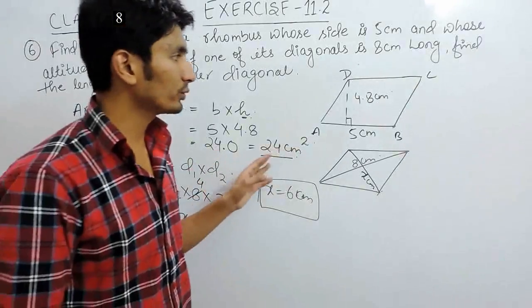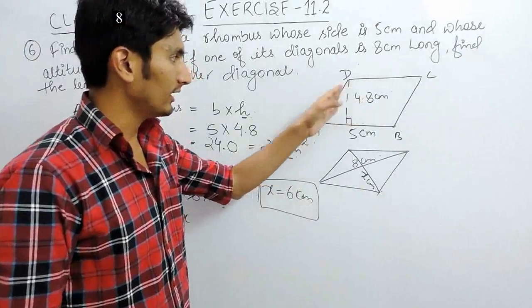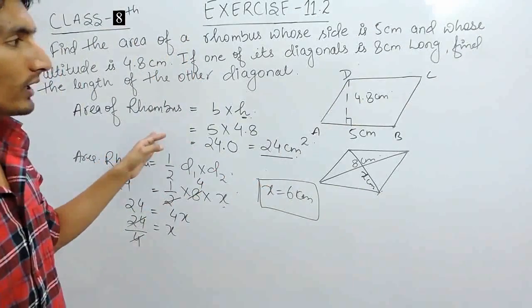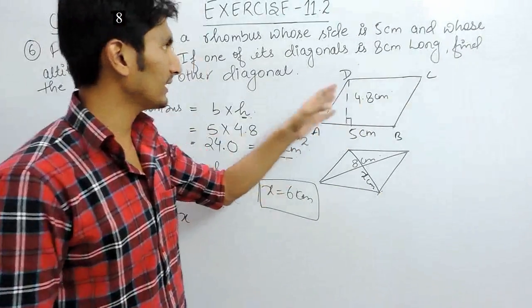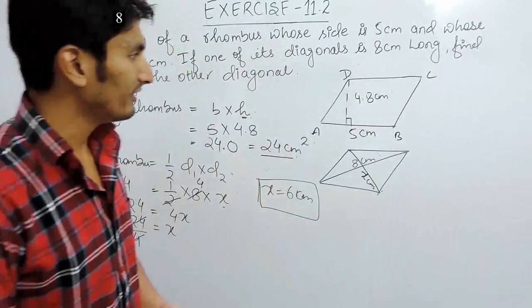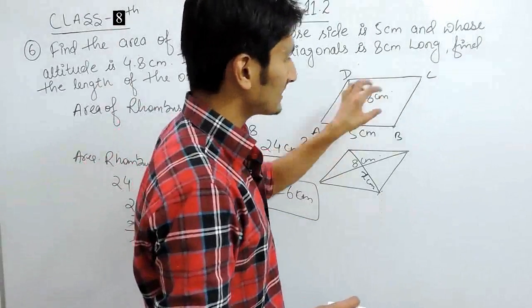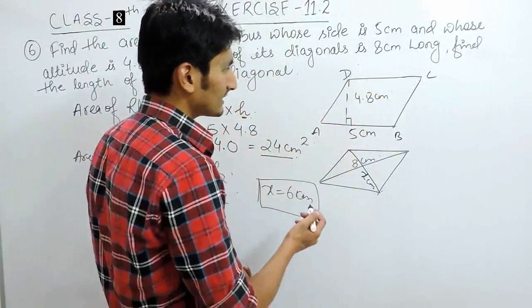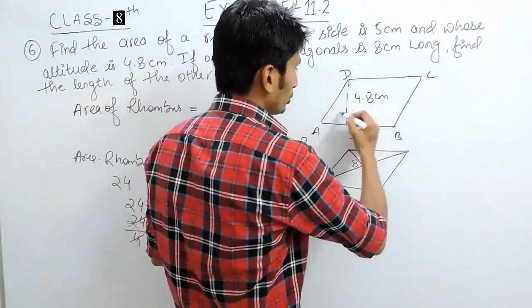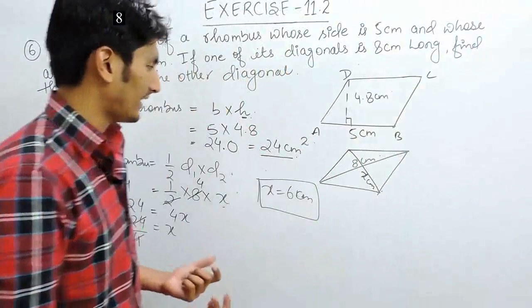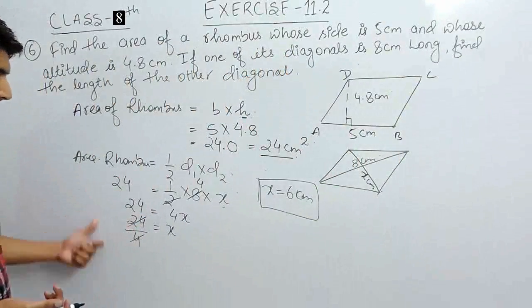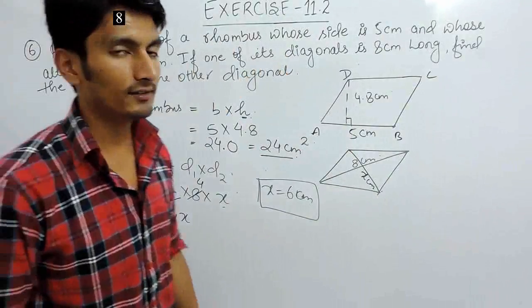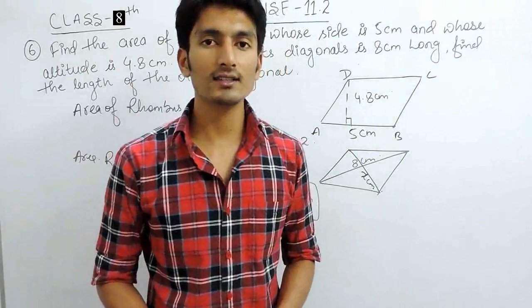First of all, we are using the area formula for the parallelogram because rhombus is nothing but a parallelogram. In the second case, we are saying the rhombus is same. So, obviously, the area should be the same. But in this case, you have to use the formula for the diagonal and after that, we are simply solving it and we are able to find its answer. Thank you.